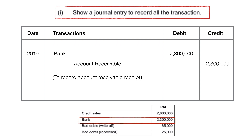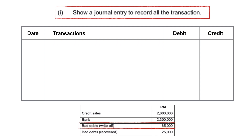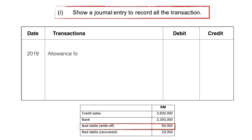Next, we are going to record the bad debt write-off. This is what happens when the accounts receivable is unable to pay the obligation. What we will do is we will debit allowance for doubtful debt and we will credit accounts receivable.